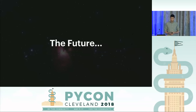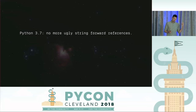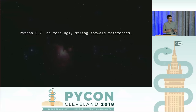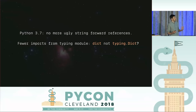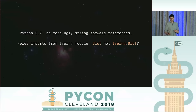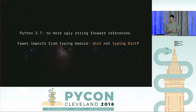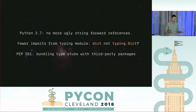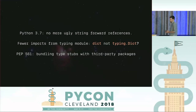What's coming next in Python typing? In Python 3.7 there will be a future import to eliminate ugly string forward-references currently needed for circular type references. Potentially in the future we may be able to use lowercase built-in dict instead of importing capital-D Dict from typing. And there's a recently accepted PEP for a standard for bundling type stubs with third-party packages, making it much easier to distribute type annotations with libraries on PyPI.